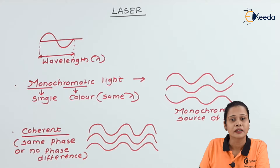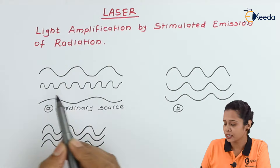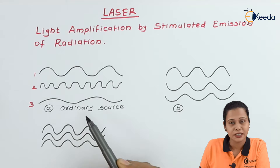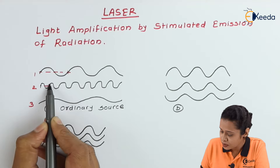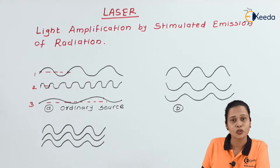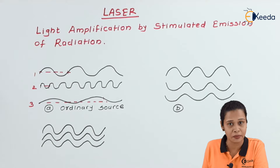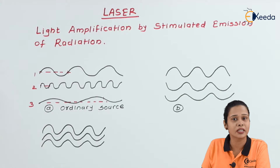Let us look at other sources of light. The first source consists of three waves. If you observe these three waves, all three have different wavelengths as well as their phases are also not the same. We can say this is an ordinary source of light. Examples of an ordinary source are light coming from a candle or light coming from the sun.